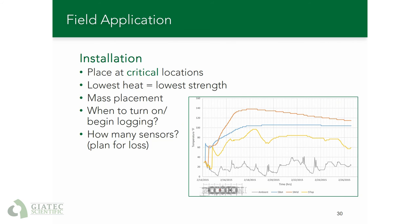You can see in the graph an example of a mass placement. This one had a bottom logger, shown in the blue line, where the concrete hit first, and the orange line is the surface. Where the temperature jumps and takes a big dip is when the protection blankets were removed temporarily, which had quite a large effect. For determining how many sensors, you always want to plan for some loss of equipment, as the construction environment can often be harsh and sensors can be damaged.